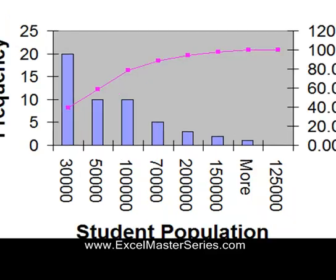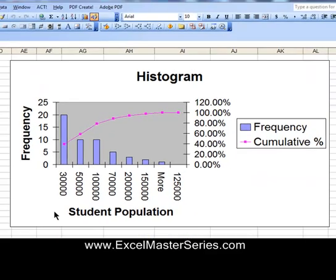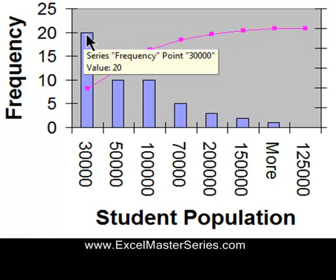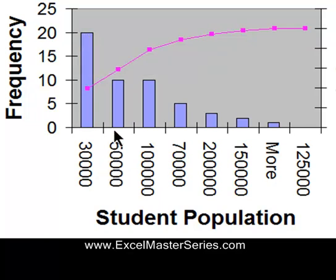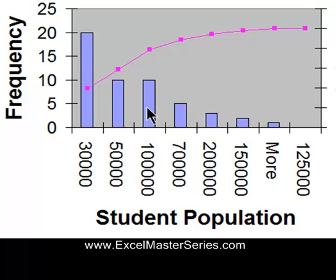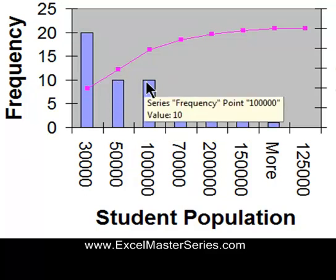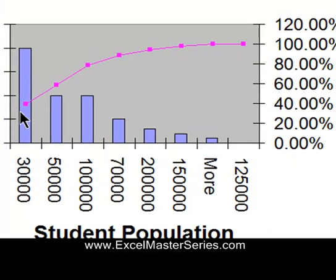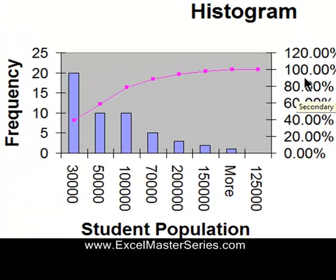And here's a Histogram Pareto style. The largest group — the largest number of schools — is on the left. The second largest group has 10 schools with populations of 30,000 to 50,000. The third largest group also has 10 schools. We can see the cumulative chart in that pink line, and we can see that 80% of the schools fall in the first three bars.